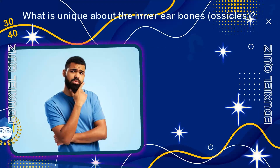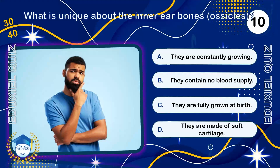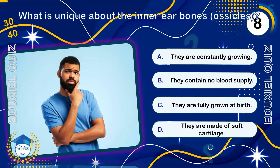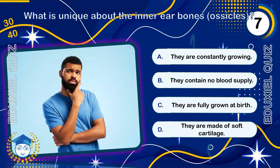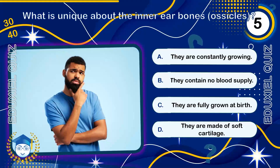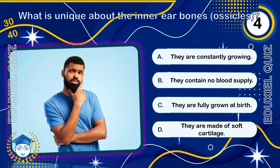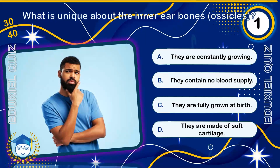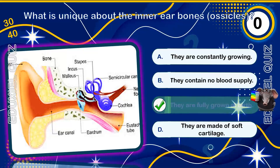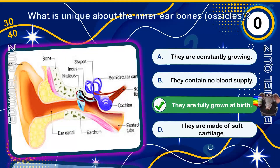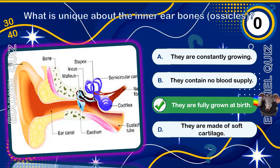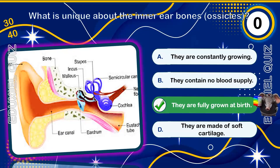What is unique about the inner ear bones, the ossicles? They are fully grown at birth. These tiny bones are the first to reach their adult size, to ensure that hearing is functional immediately after birth.